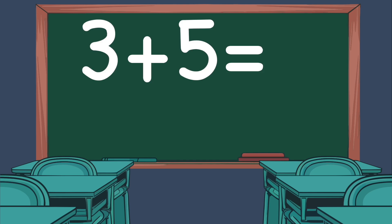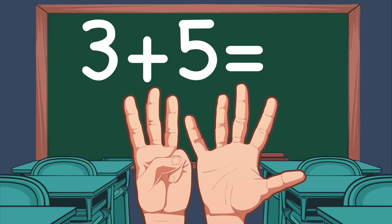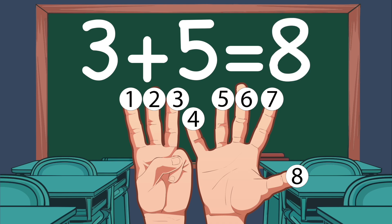Now let's do 3 plus 5. On the left hand, we show 3 fingers. On the right hand, we show 5 fingers. Now we count: 1, 2, 3, 4, 5, 6, 7, 8. So 3 plus 5 equals 8.